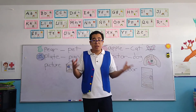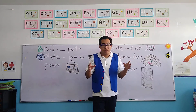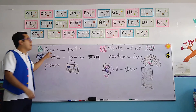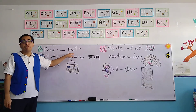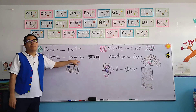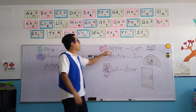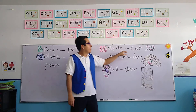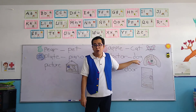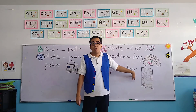Now, before we finish the class, let's review one more time the objects and pronounce them correctly. Pear, pet, plate, piano, picture, apple, cat, doctor, dog, doll, and door.